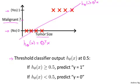That is, at the vertical axis value 0.5. And if the hypothesis outputs a value that's greater than or equal to 0.5, you predict y equals 1. If it's less than 0.5, you predict y equals 0. Let's see what happens if we do that.